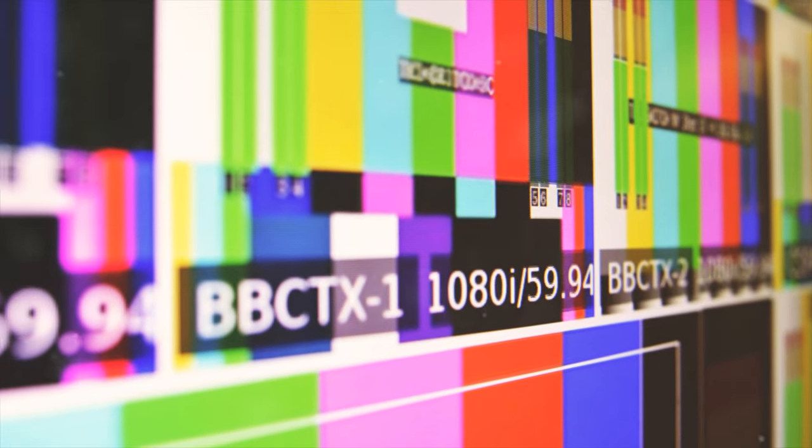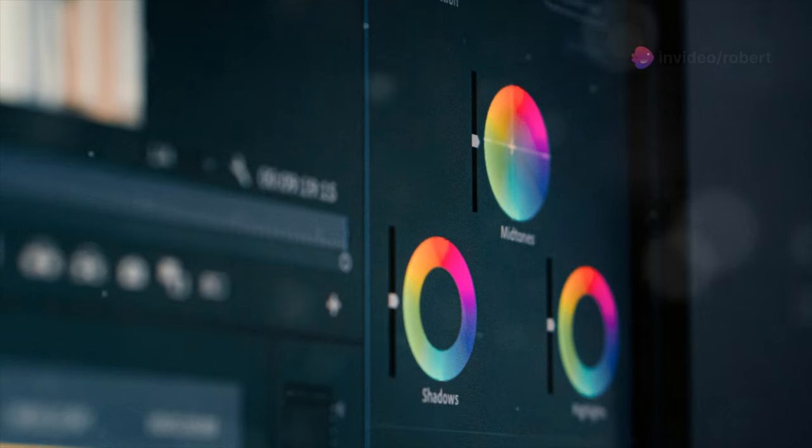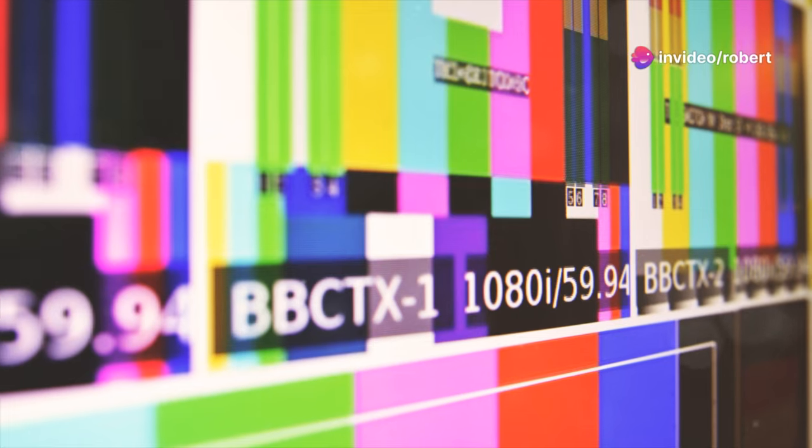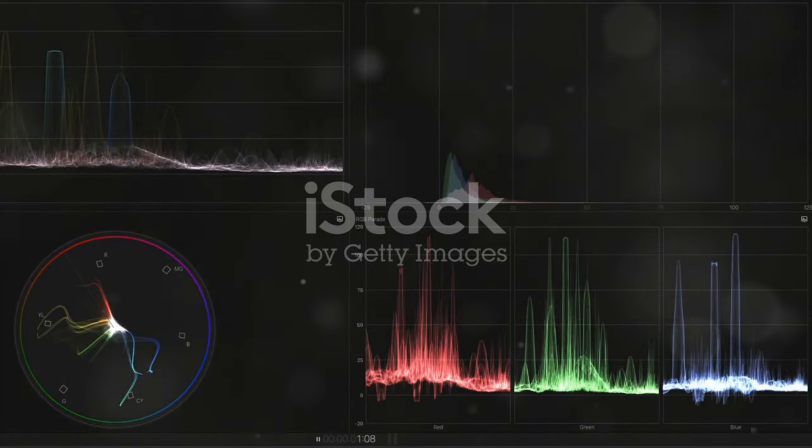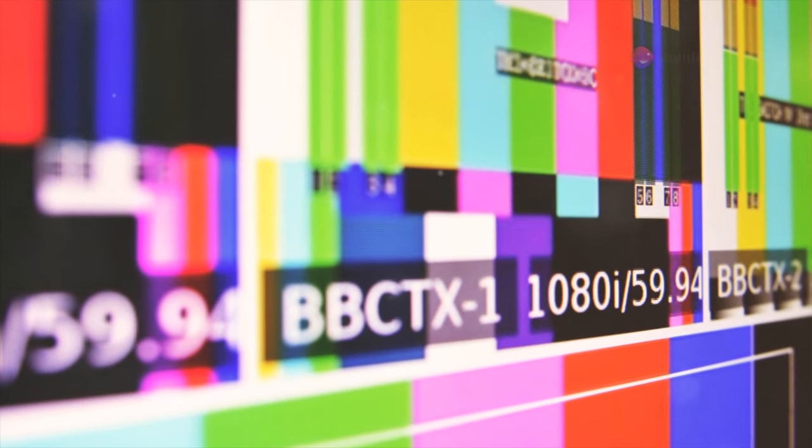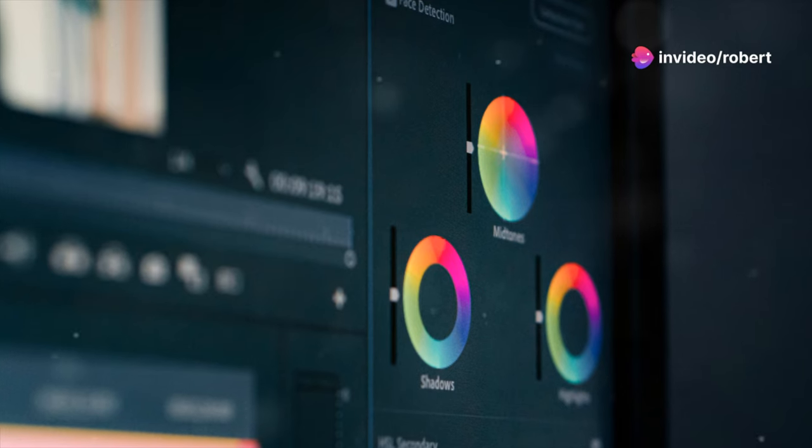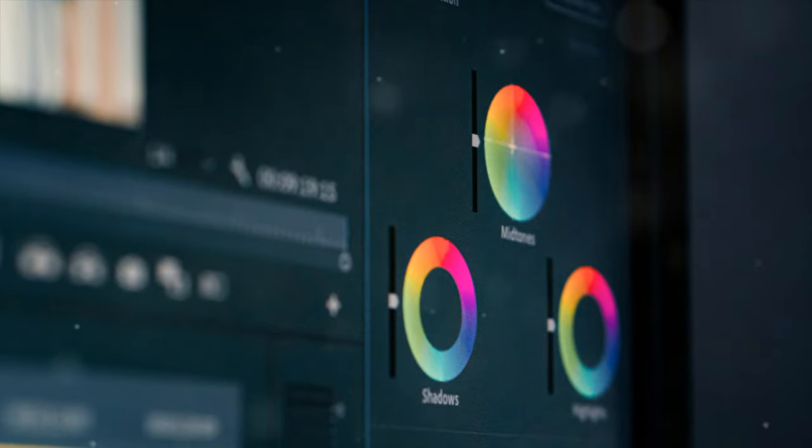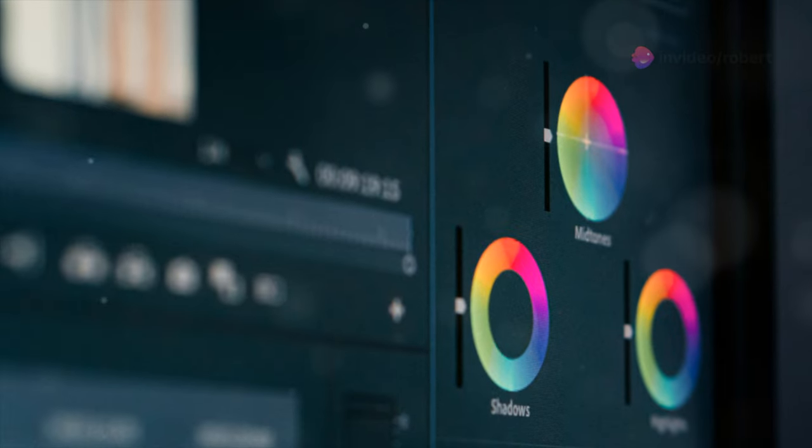Just as telescopes require regular calibration to ensure accurate observations, so too do our digital tools need to be calibrated for consistent colour representation. Colour calibration is the process of adjusting your monitor and other devices to display colours accurately. This involves using a colorimeter, a device that measures the colour accuracy of a display and creates a custom profile. This profile tells your computer how to adjust the colours it sends to your monitor, ensuring that what you see on screen is a true representation of the actual colours in your design.